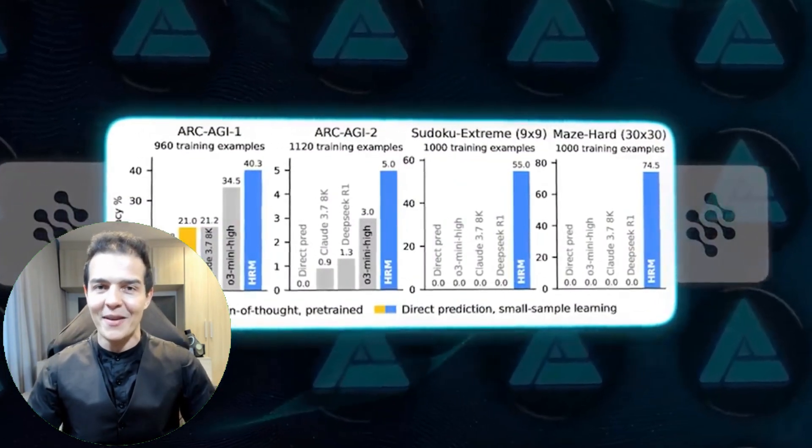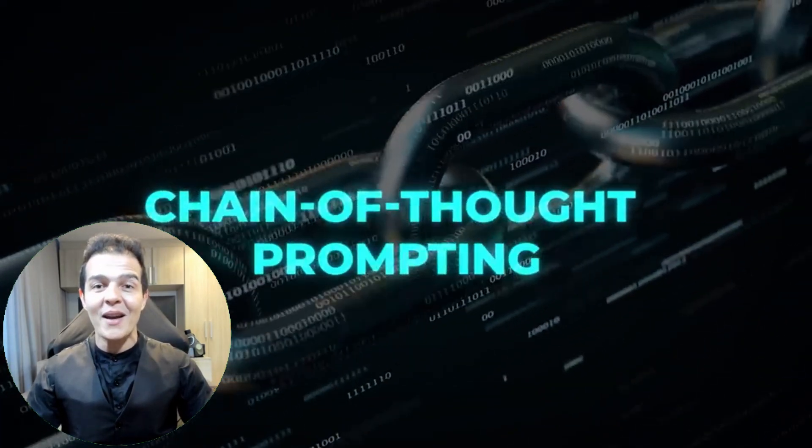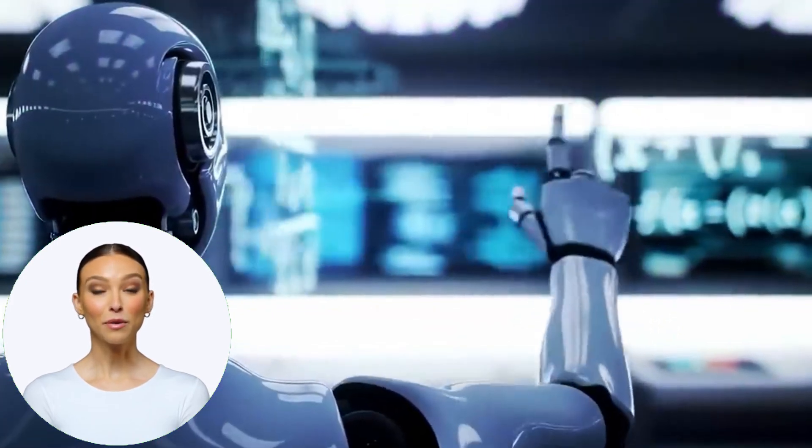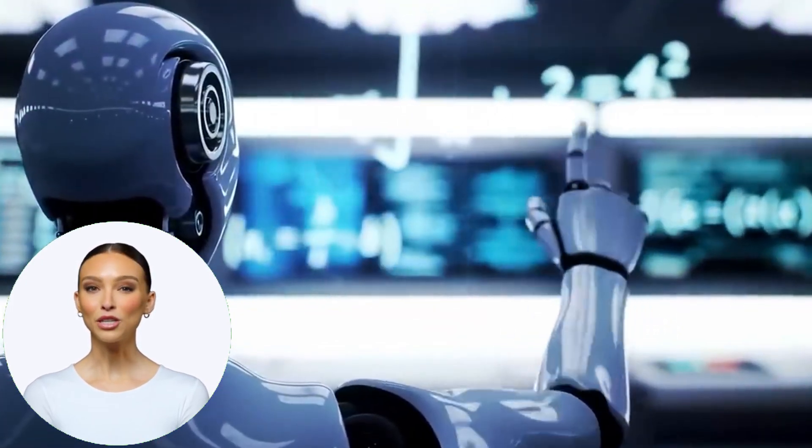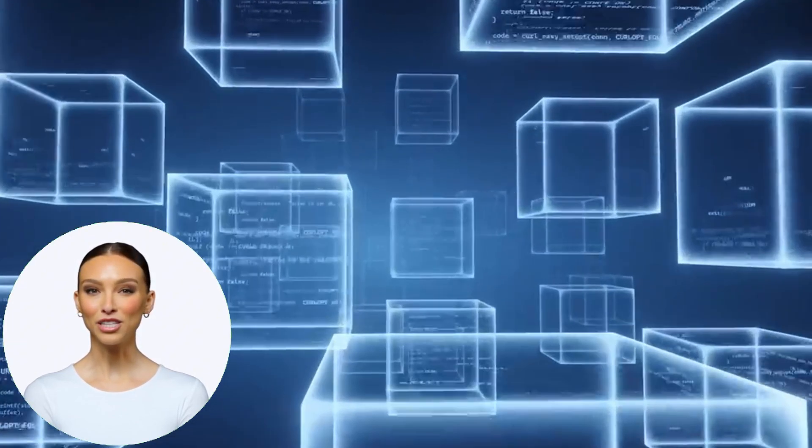To give you an idea, GPT-1 had 117 million parameters, the HRM 27 million. That's right, less than a quarter of the size. But here's the crucial point. It outperformed Claude 3.7 and the OpenAI O3 mini-high model on reasoning benchmarks.